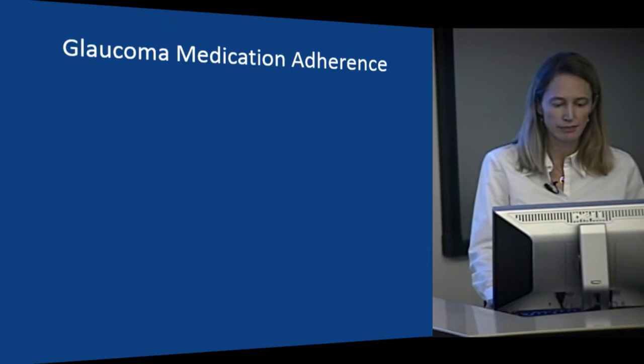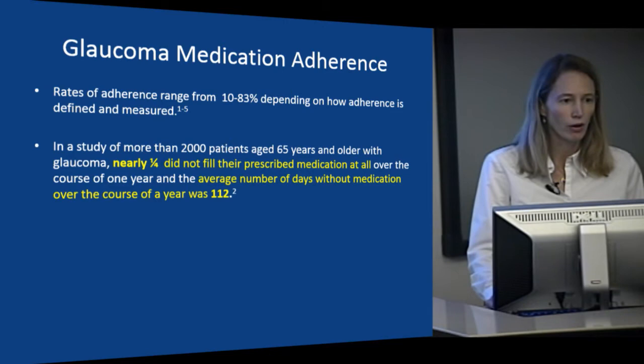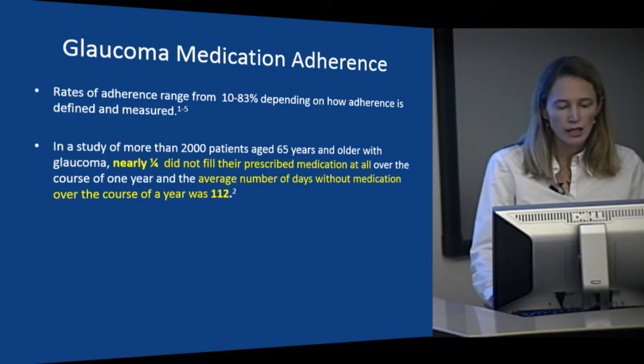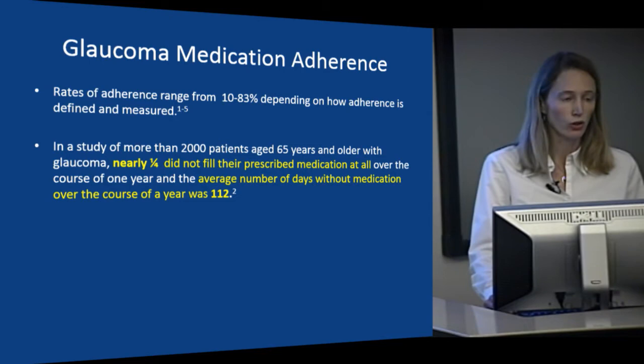Many of you who take care of patients with chronic diseases are very aware that medication adherence is poor in these chronic asymptomatic diseases, and it's very similar for glaucoma. The rates of adherence range from 10 to 83% depending on how you define and measure it. In a study of 2,000 patients aged 65 and older, nearly a quarter didn't fill the prescription at all, and the average number of days without medication over the course of a year was 112.